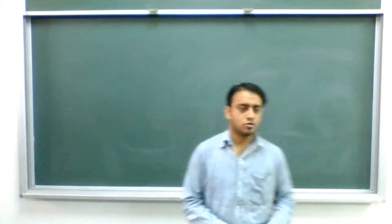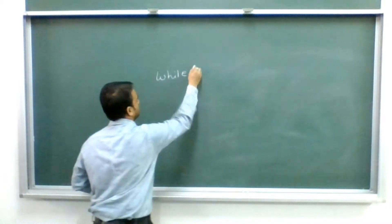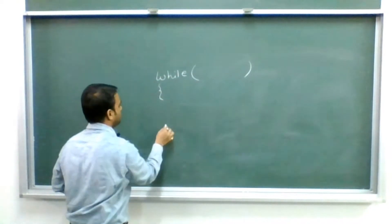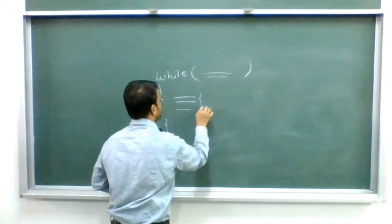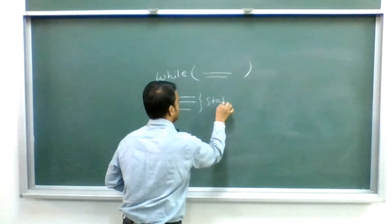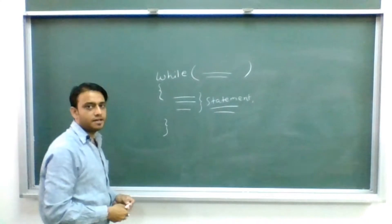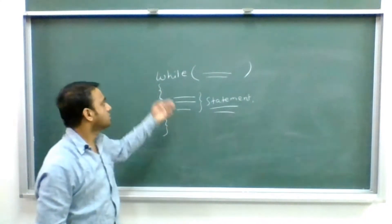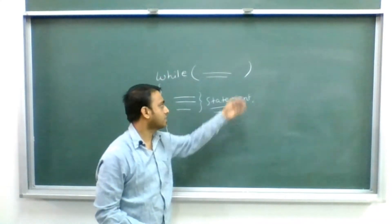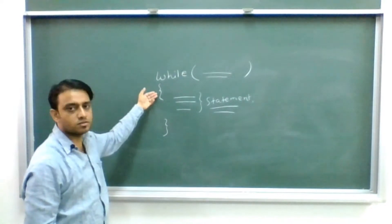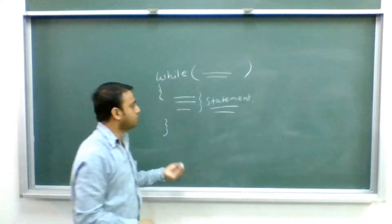So let's begin. This is the basic syntax of the while loop. Within this we have a certain condition, and there is a chunk or block of statements that resides within the body of the loop. It starts with the keyword 'while', followed by an open bracket, the condition resides within this bracket, then a closing bracket, followed by the opening and closing braces — this is the basic syntax.